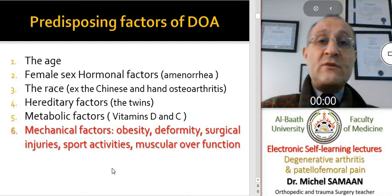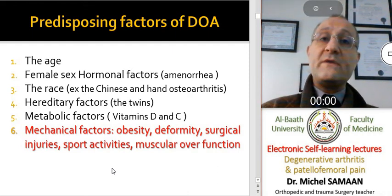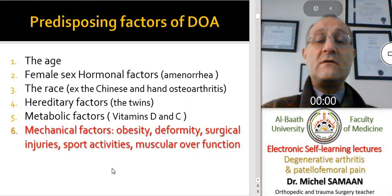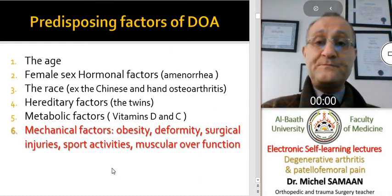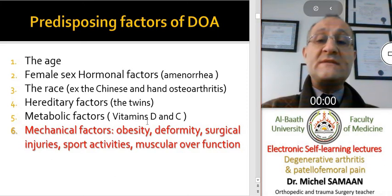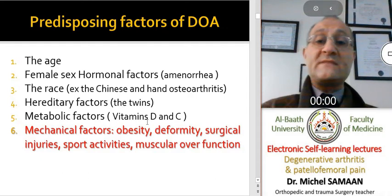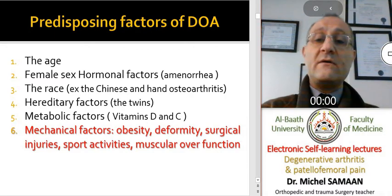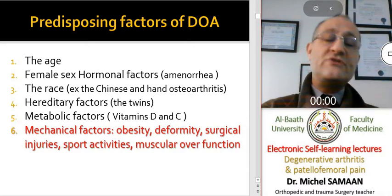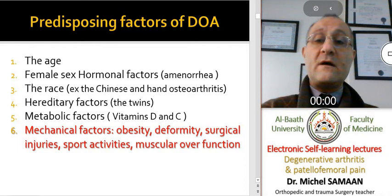Some metabolic factors and malnutrition can cause early degeneration of the cartilage layer. Mechanical factors such as obesity, deformity of the extremities, surgical injuries, severe sport activities, and muscle over-function can cause or predispose early degeneration of the articular cartilage.